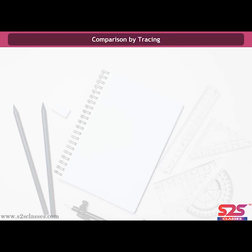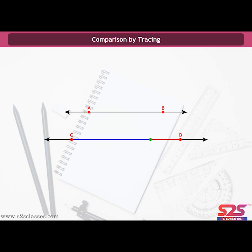Comparison by Tracing. Another method of comparing line segments is by tracing. Using a tracing paper, trace AB and place it on CD. Now we can easily tell that CD is greater than AB. The accuracy of this method depends upon the accuracy of the trace. Also, it is tedious to trace a line segment every time we want to compare it.